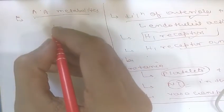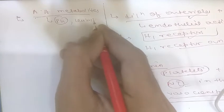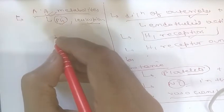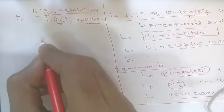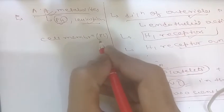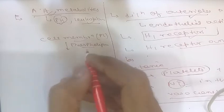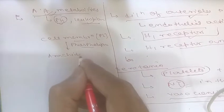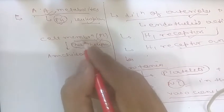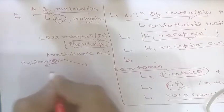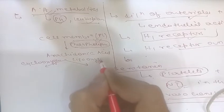The next mediators are arachidonic acid metabolites — the lipid mediators — which include prostaglandins and leukotrienes. They are produced from arachidonic acid present in membrane phospholipids and stimulate vascular and cellular reactions in acute inflammation. The enzyme phospholipase acts on the cell membrane and releases free arachidonic acid. This arachidonic acid then follows two pathways: if acted upon by cyclooxygenase enzyme, it produces one set of products; if acted upon by lipoxygenase enzyme, it produces another.